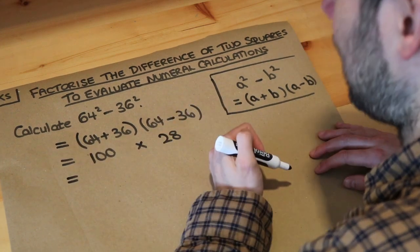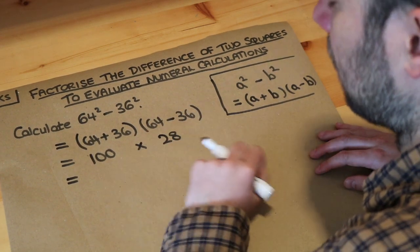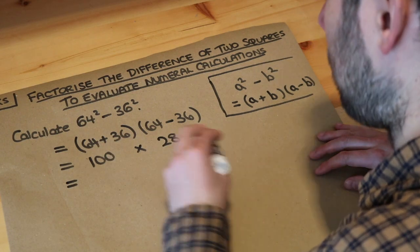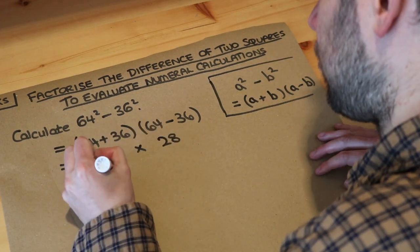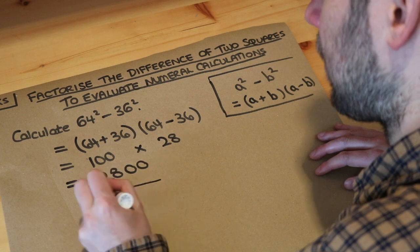Now we've got a really easy calculation. We're just doing 28 times 100. When we multiply by 100, we put two zeros on the end, so it's 2800. That's the final answer.